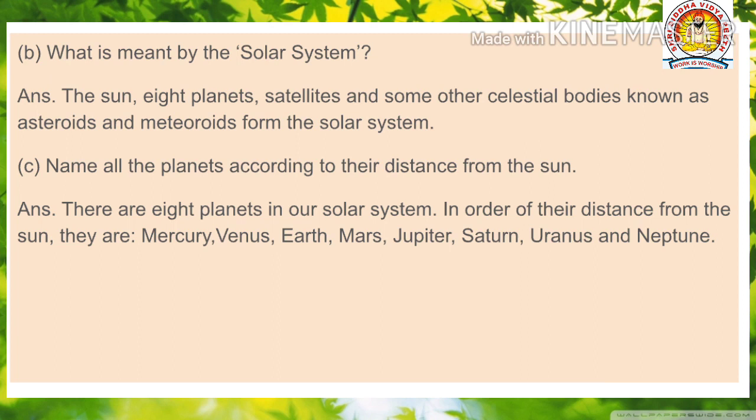Question number C: Name all the planets according to their distance from the Sun. There are eight planets in our solar system. In order of their distance from the Sun, they are Mercury, Venus, Earth, Mars, Jupiter, Saturn, Uranus, and Neptune.